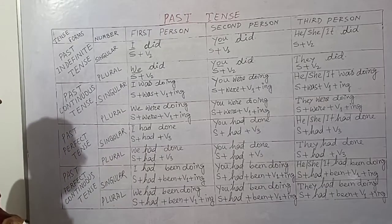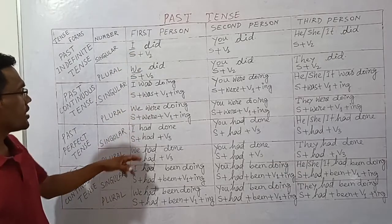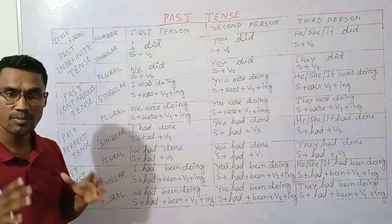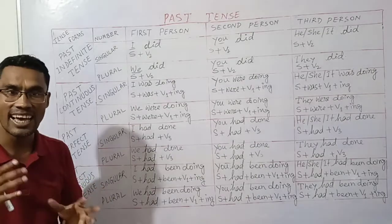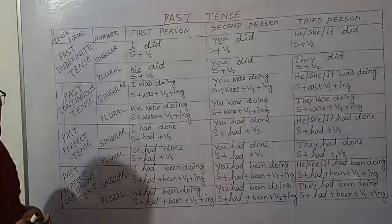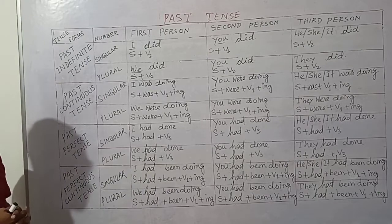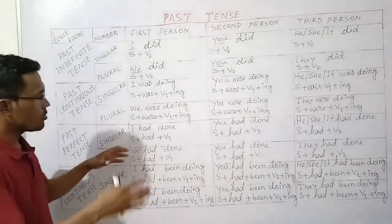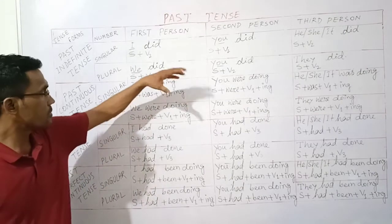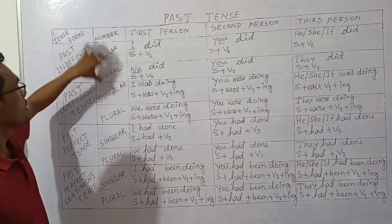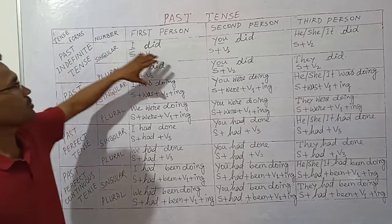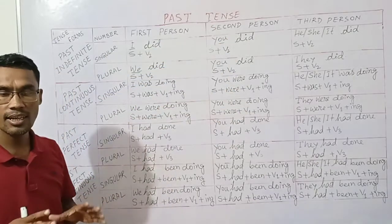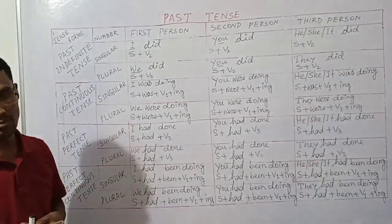Now for past perfect tense. The subject plus auxiliary verb 'had.' For all persons — first person singular, second person, and third person — the auxiliary verb is 'had.' Subject plus 'had' is the structure.